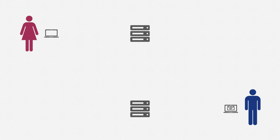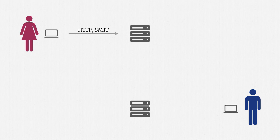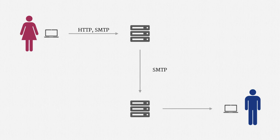Now let me explain the exact same steps with more technical precision. When Alice sends an email, she might use one of two common protocols: HTTP or SMTP. HTTP would be webmail and SMTP would be a more traditional email client. Then SMTP gets used to move the data between Alice's email provider and Bob's email provider. Finally, Bob might retrieve the email with HTTP, POP, or IMAP. HTTP again reflects webmail, and POP and IMAP are protocols used by conventional mail apps.